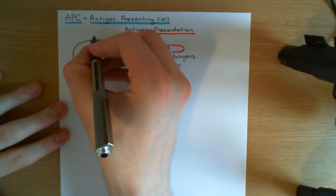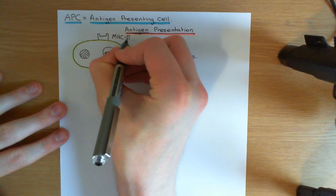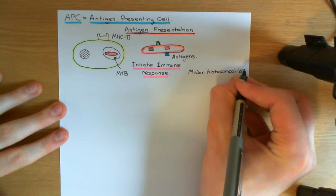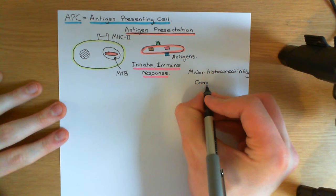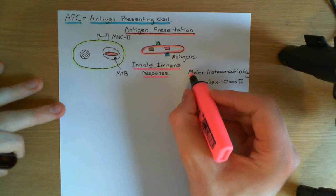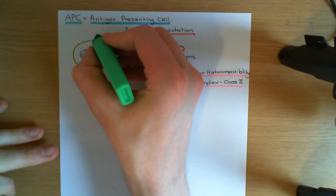These fragments can be put on the surface of the antigen presenting cell to display to T cells to activate the adaptive immune response. On the surface of the antigen presenting cell, there are special protein complexes known as MHC class II protein complexes — MHC stands for Major Histocompatibility Complex. There is also a MHC class I, which we won't be discussing because it's not relevant here; mycobacterium tuberculosis is going to involve MHC class II primarily.